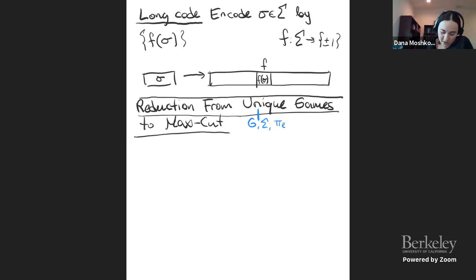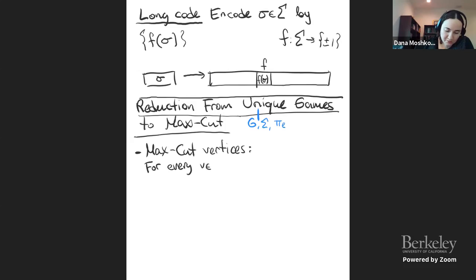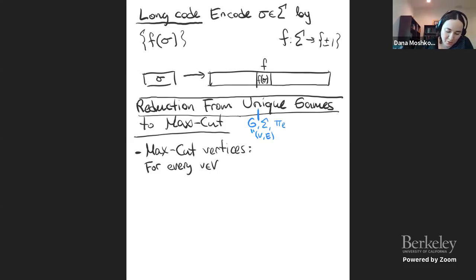In MaxCut, the solution assigns each vertex a Boolean value — which side of the cut it's on. This Boolean value is supposed to be f applied to the label of V. Now for the edges: here is how you pick a random edge. You take V, then pick two edges UV and U'V in E — two random edges touching V — and also pick a function f.